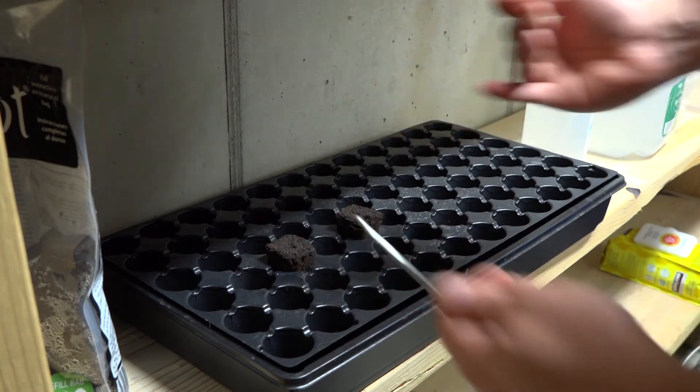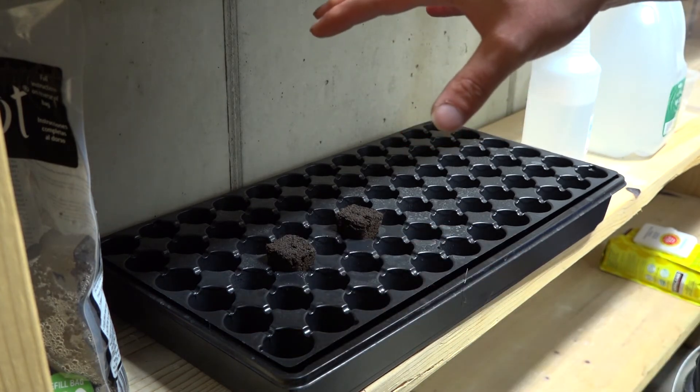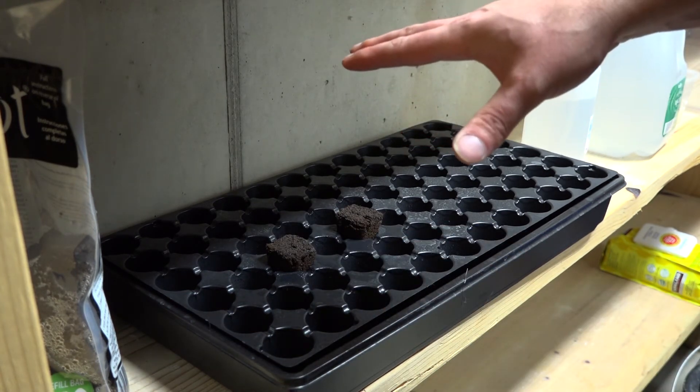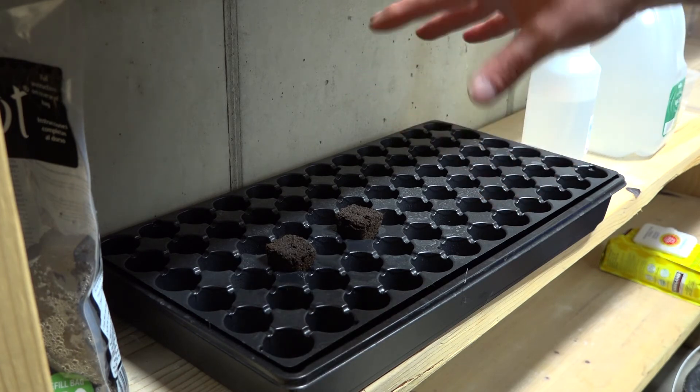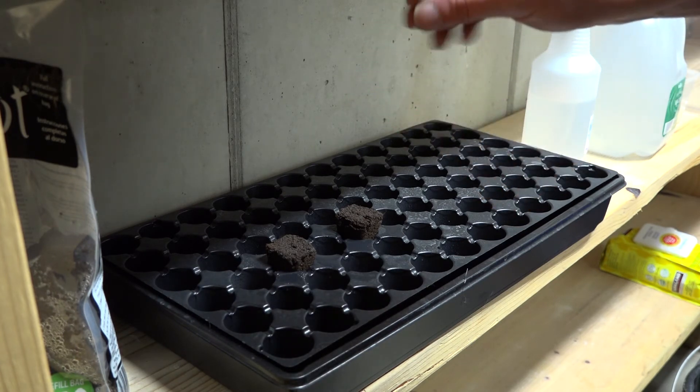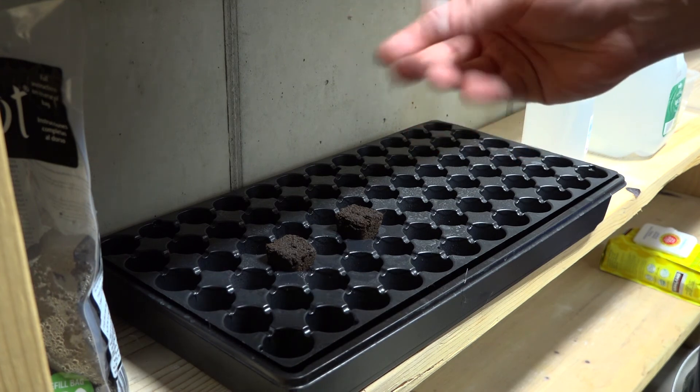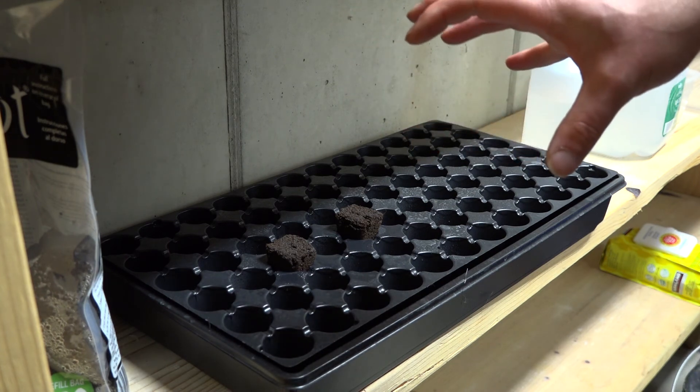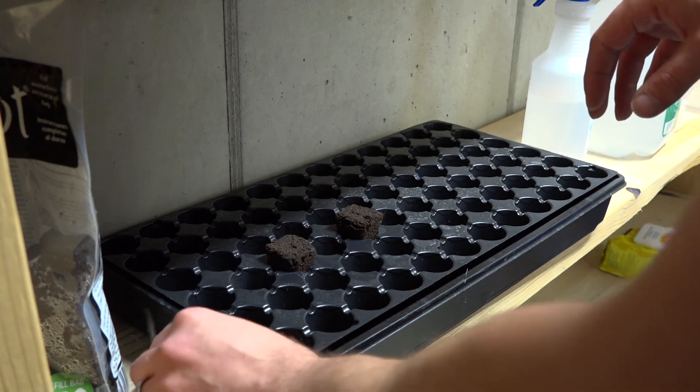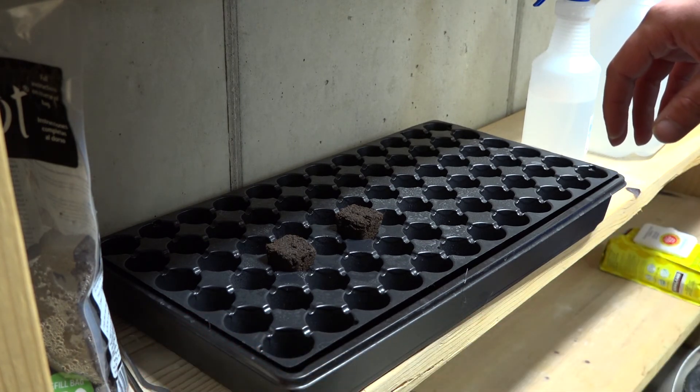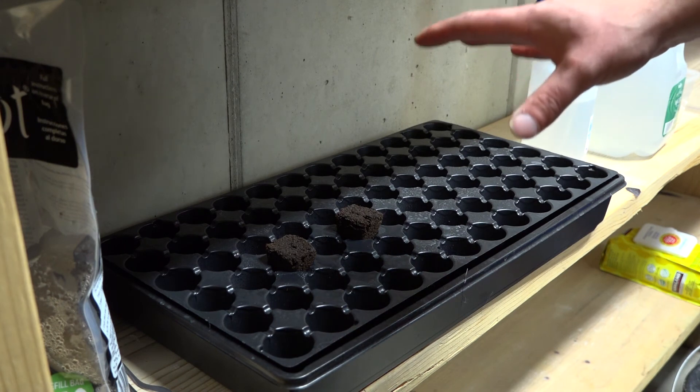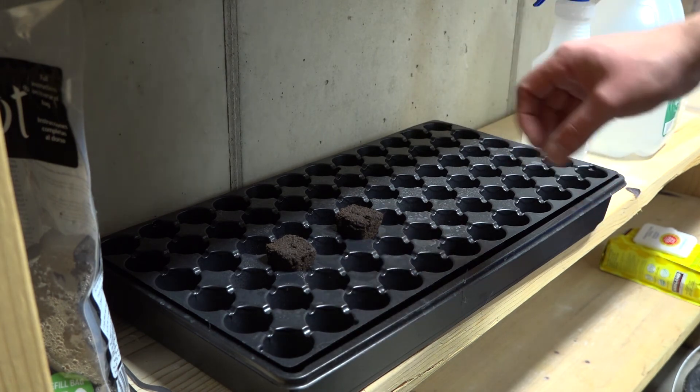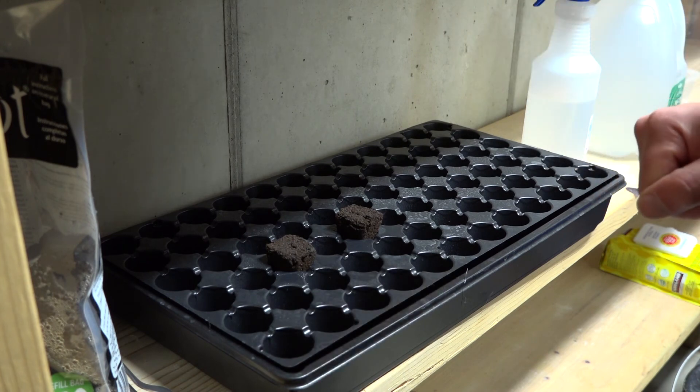And then it's going to go on a heat mat under no light for the first probably 24 hours, 48 hours. And then I'm going to introduce a soft light. In this case I'm going to be using a small reflector with a 14-watt fluorescent bulb that is rated for 5,000 Kelvin or 5,000K, also known as daylight. So we'll get to that step.